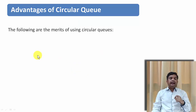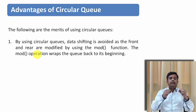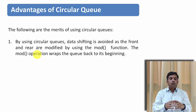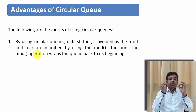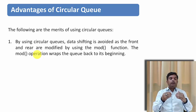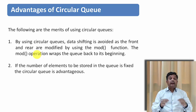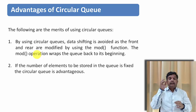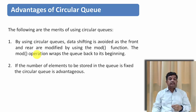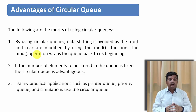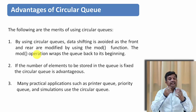What are the advantages of the circular queue? In a circular queue we need not shift the data. We can avoid readjustment of rear and front pointers by using a mod function. This mod function will wrap the queue back to the beginning. Apart from that, if the number of elements to be stored in a queue is fixed, then circular queue is much more advantageous. We use circular queues in many applications like printer queue, priority queue, and simulations.